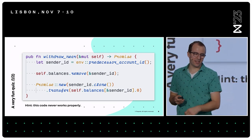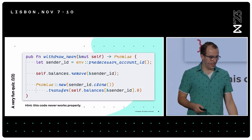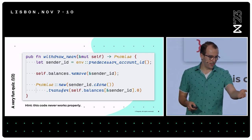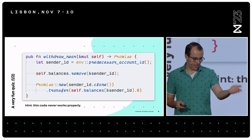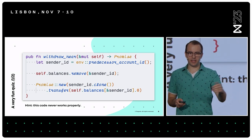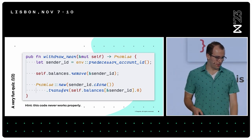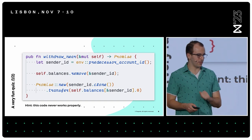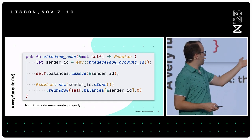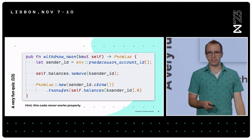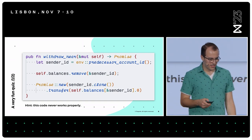Yes, that is exactly right. We are deleting the record in our balance table before we then try to read that record. So of course this code never works properly, because every single time we run this function, the balance record will not exist — we already deleted it.